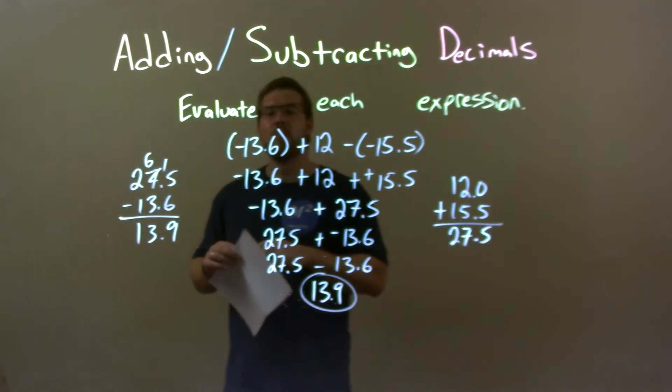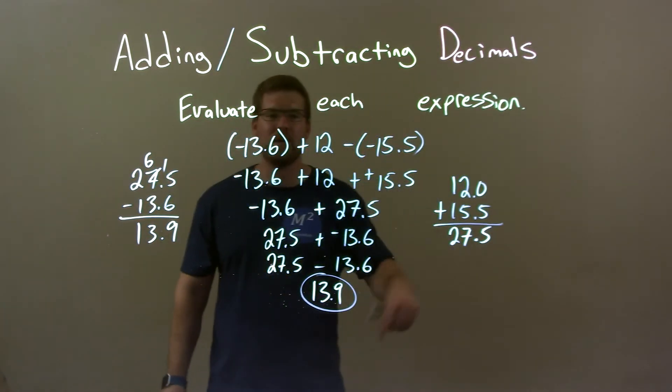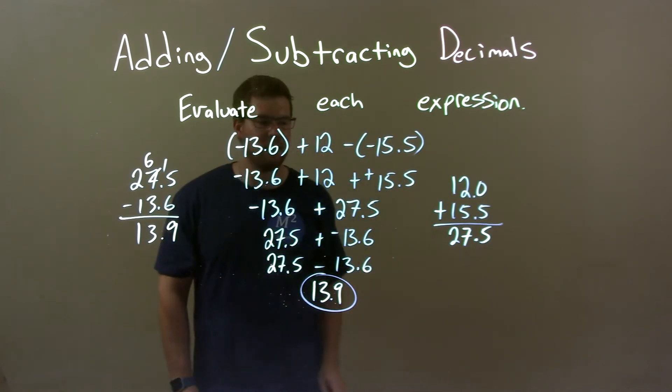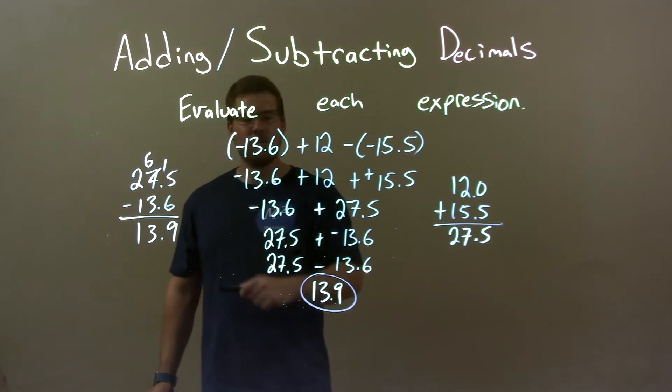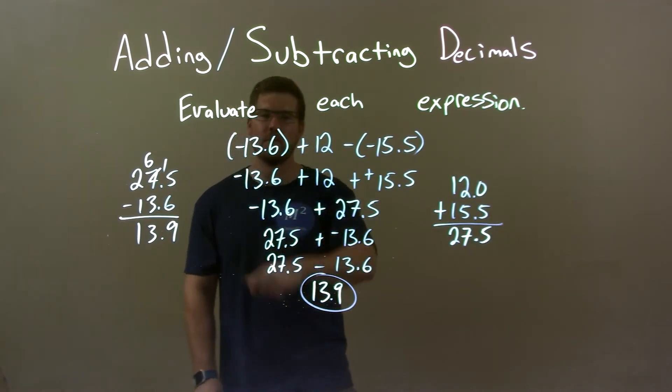Quick recap. We're given negative 13.6 plus 12 minus a negative 15.5, and we have to evaluate that. Adding a negative is plus a positive. Added these two numbers together, got 27.5. Then, I rearranged negative 13.6 plus 27.5 to be 27.5 minus 13.6.